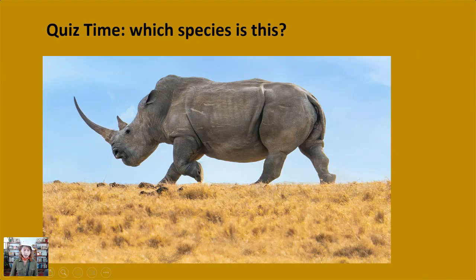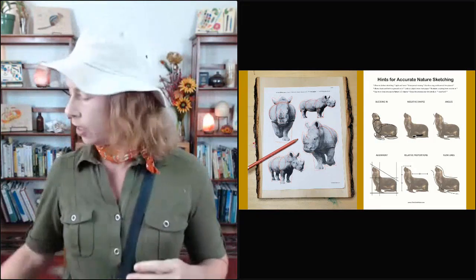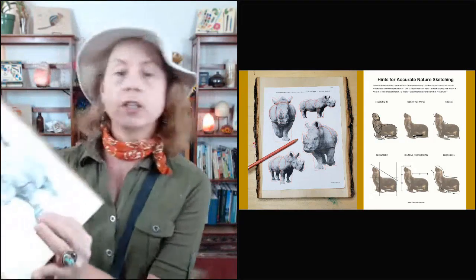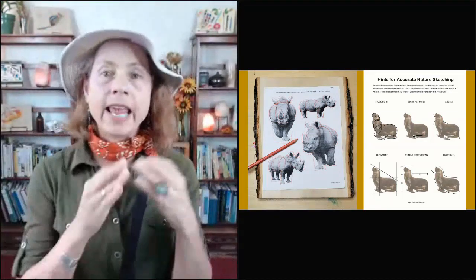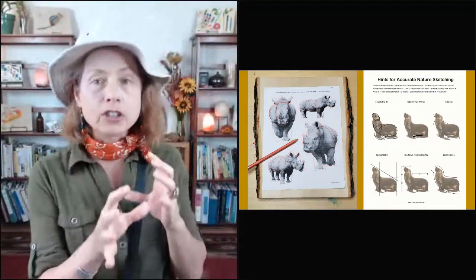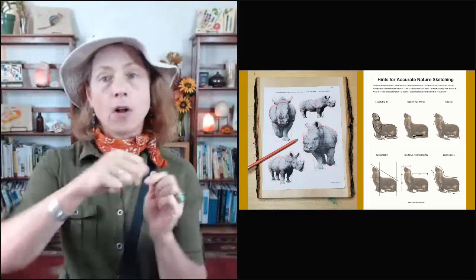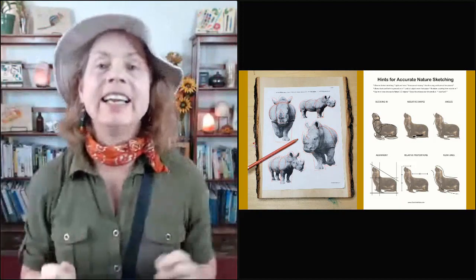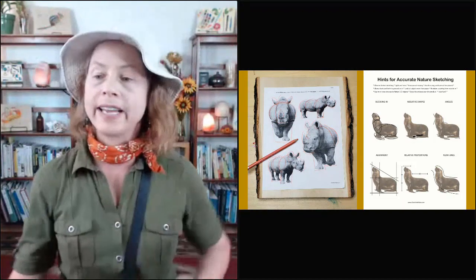Another thing you can notice is that the white rhino, with that giant head and giant muscular withers, is normally grazing, so its head position is down towards the grass. The black rhino often has its head position up. This older white rhino has an even longer front horn. Now we're going to move on to the more detailed, more careful drawing.